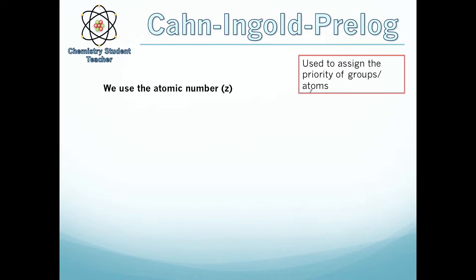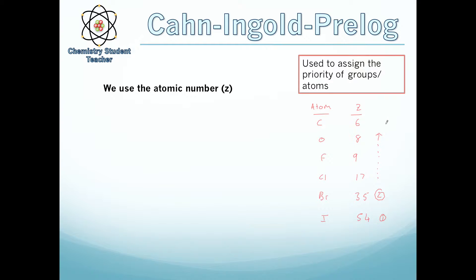The next thing we need to look at is the Kahn-Ingold-Prelog system. This will be used for E/Z and cis/trans isomers, so we need to know this first. It's used to assign the priority of groups or atoms on a molecule, and it uses the atomic number, also denoted by Z. So: carbon has atomic number 6, oxygen is 8, fluorine is 9, chlorine is 17, bromine is 35, and iodine is 53. The atoms with the highest atomic number have the highest priority. So iodine would have the highest priority, followed by bromine, all the way down to carbon which has the lowest.